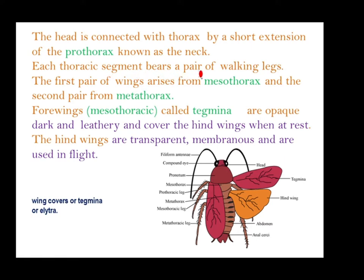Each thoracic segment bears a pair of walking legs. The first pair of wings arises from the mesothorax and the second pair arises from the metathorax.